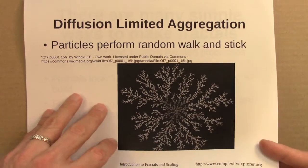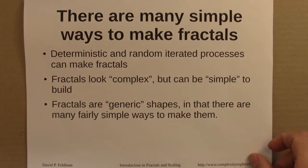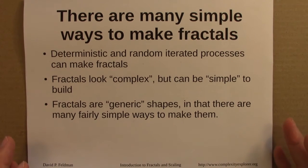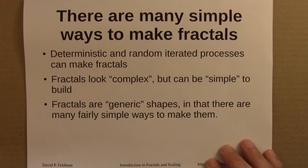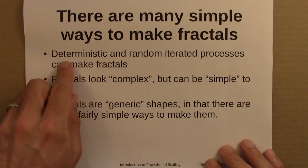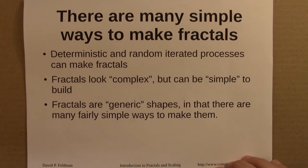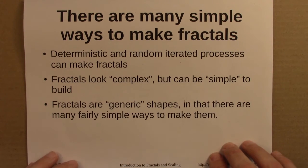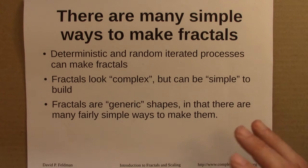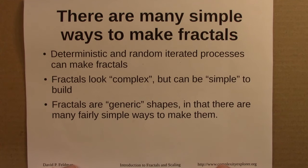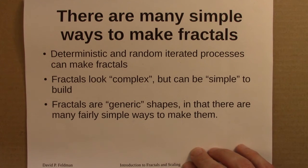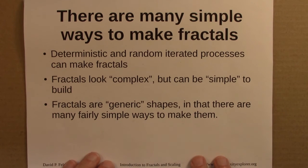The main conclusion from all of this is that there are many simple ways to make fractals. Both deterministic and random iterated processes lead to fractals. Fractals may look complex or complicated, but if you think about how they're built, they often can be built quite simply. These very simple rules that get repeated produce these very intricate fractals. I like to think of fractals as being, in a sense, a generic shape — there are many fairly simple ways to make them.